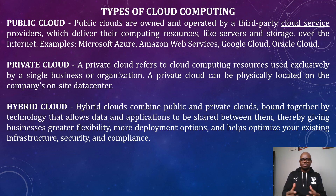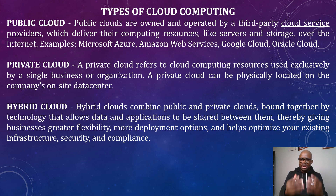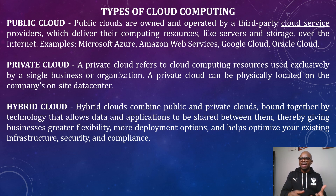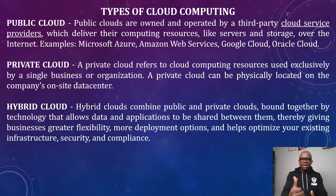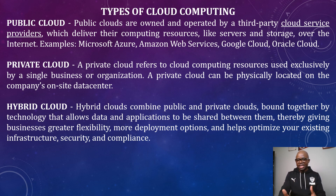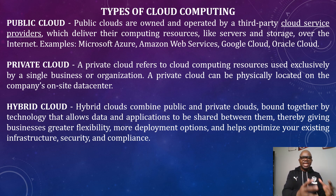Now, types of cloud computing. There are three different types. First, the public cloud — owned and operated by third-party cloud service providers, which deliver computing resources such as servers and storage over the internet. Examples include Amazon Web Services, Microsoft Azure, Google Cloud, Oracle Cloud, and IBM Cloud. The second type is private cloud, which refers to cloud computing resources used exclusively by a single business or organization — where an entity builds its own data center for its own exclusive use.